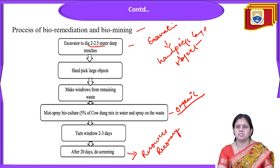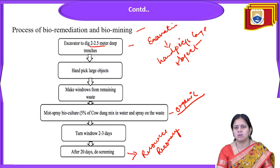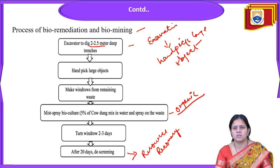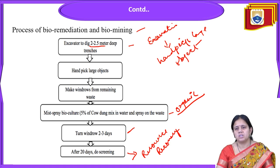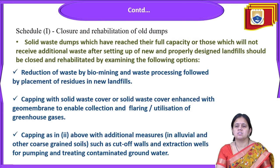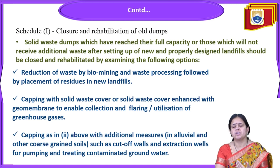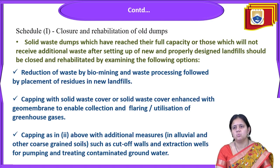To summarize the bioremediation process: excavation, hand-picking large objects, windrow formation from remaining waste, mist spray of 5% cow dung bioculture, turning the windrow every two to three days, then screening after 20 days for resource recovery. Schedule 1 also covers the closure and rehabilitation of old dump sites — solid waste dumps that have reached full capacity or will not receive additional waste after a new properly designed landfill is set up should be closed and rehabilitated.